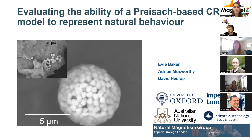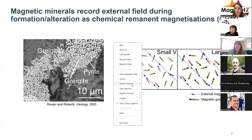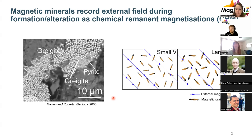I'm going to be talking about work that I did during my PhD, which was at Imperial, and now I'm doing a postdoc at Oxford. I'm interested in trying to model CRM behavior and trying to understand what we see in natural samples. CRMs are recorded in two different ways: rocks can record external magnetic fields either when they grow — the nucleation and growth of magnetic minerals inside a non-magnetic matrix is called a grain growth CRM. There's also an alteration CRM, which is when magnetic minerals alter to other magnetic minerals, and these alteration CRMs are complicated by exchange interactions between the primary and secondary magnetic phase.